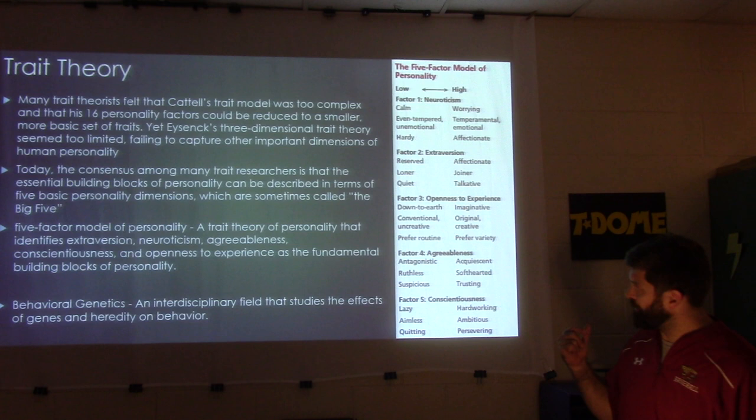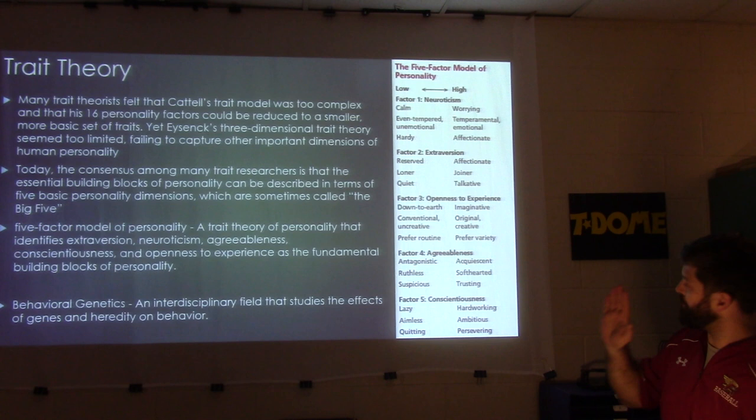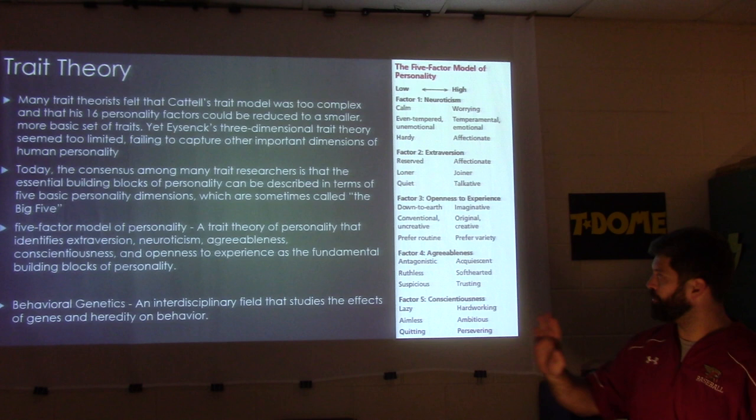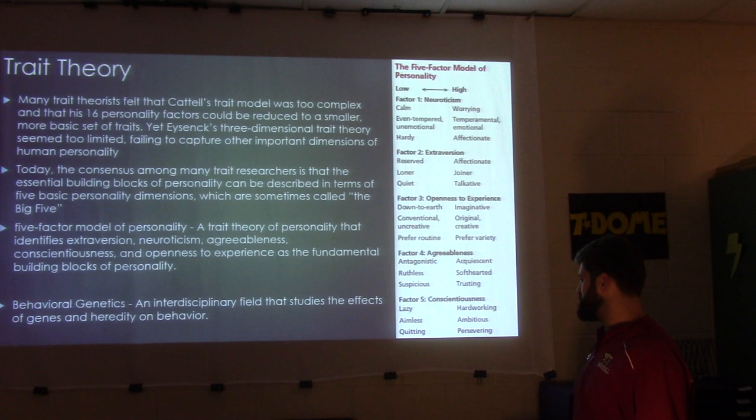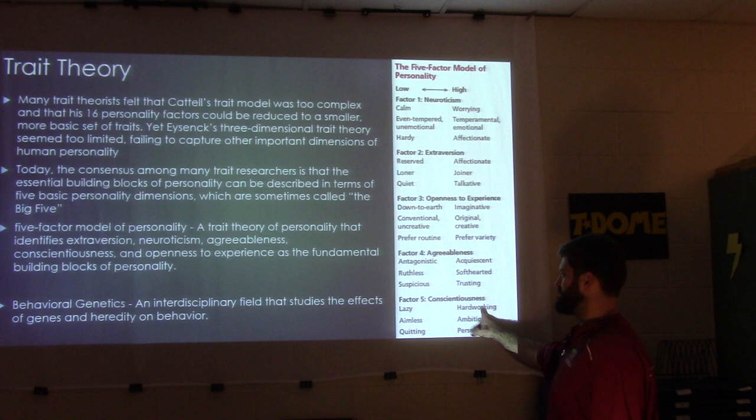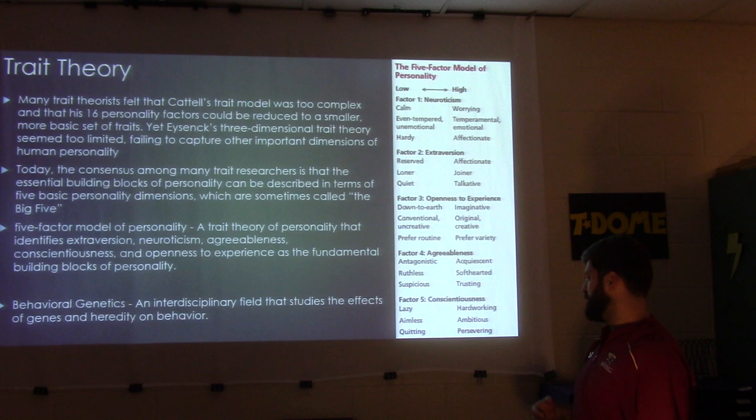The Big Five factors are: factor one, neuroticism (low to high); factor two, extraversion (low to high); factor three, openness to experience (low to high); factor four, agreeableness (low to high); and factor five, conscientiousness (low to high). Conscientiousness ranges from lazy to hardworking — if you're low, you're lazy, aimless, and quit a lot; if you're high, you're hardworking, ambitious, and persevering.